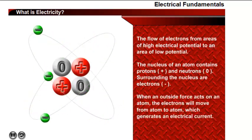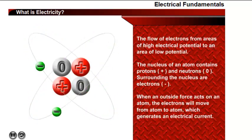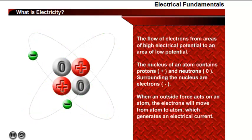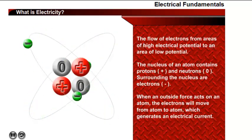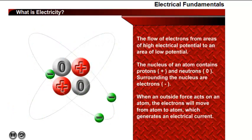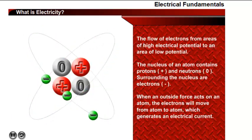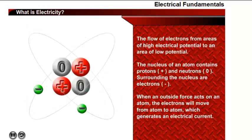When the balancing force between protons and electrons is upset by an outside force, electrons will move from atom to atom. If an atom loses electrons, the flow of these electrons constitutes an electric current.